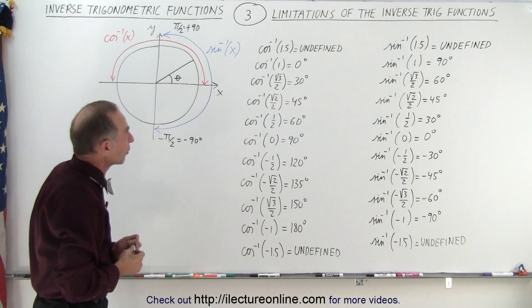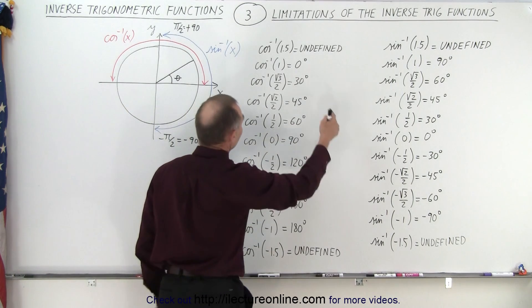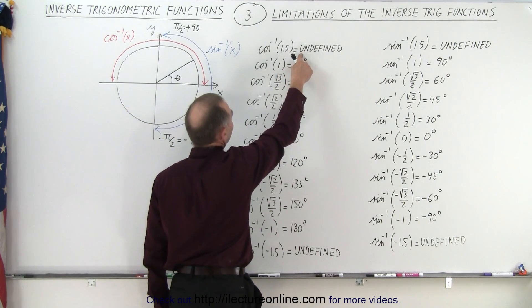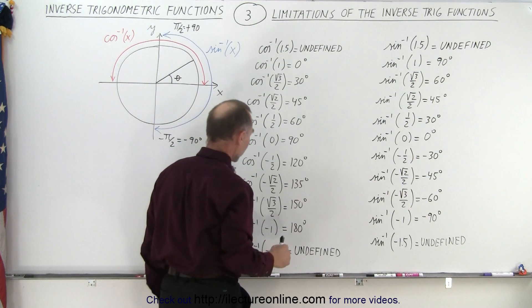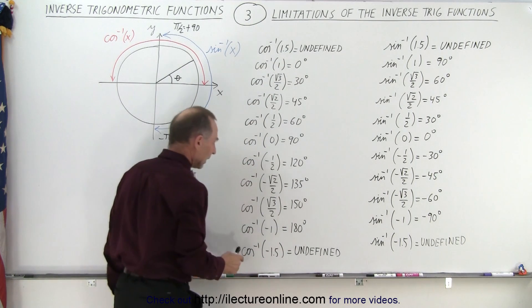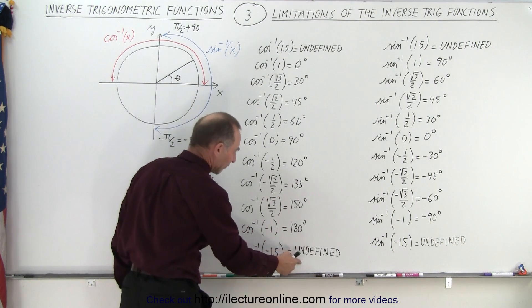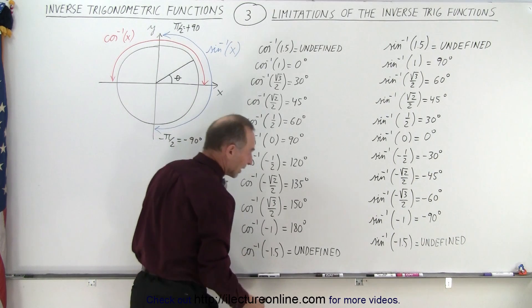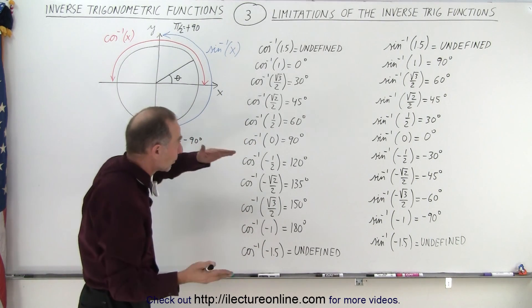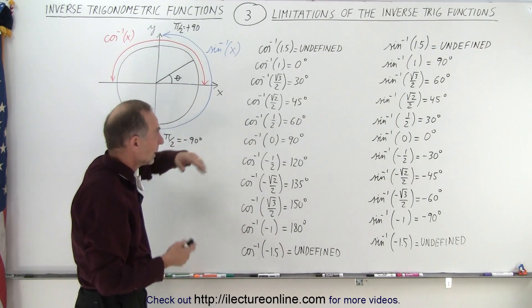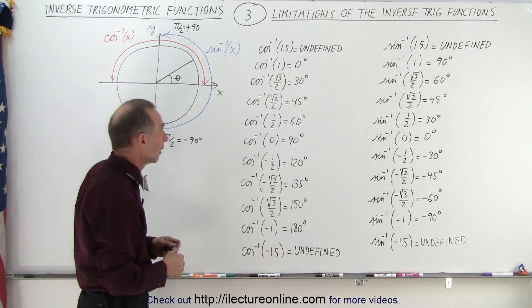For the cosine function, notice again, just like with the sine function, any number bigger than 1 gives you an undefined value when you try to take the inverse cosine. And any number smaller than negative 1 also gives you undefined when you try to take the inverse cosine. So again, you're limited to values between 1 and negative 1, inclusive.